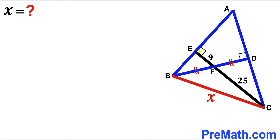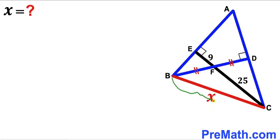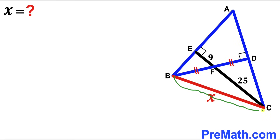As a result, segment EF is 9 units whereas segment FC is 25 units. Moreover, segment BF equals segment FD, and furthermore this side BC is represented by X. Our task is to find the value of X — in other words, we are going to find the length of side BC.